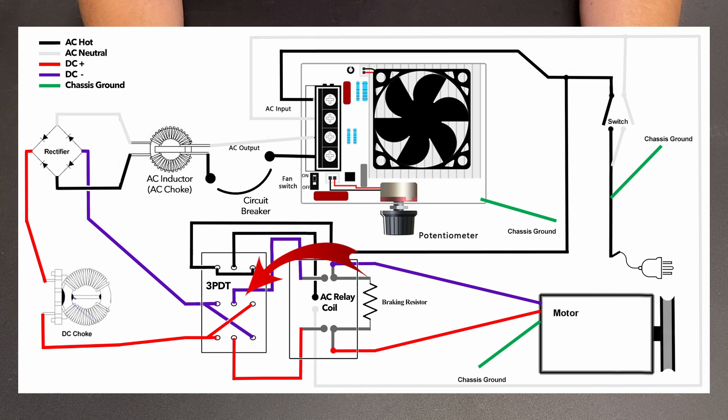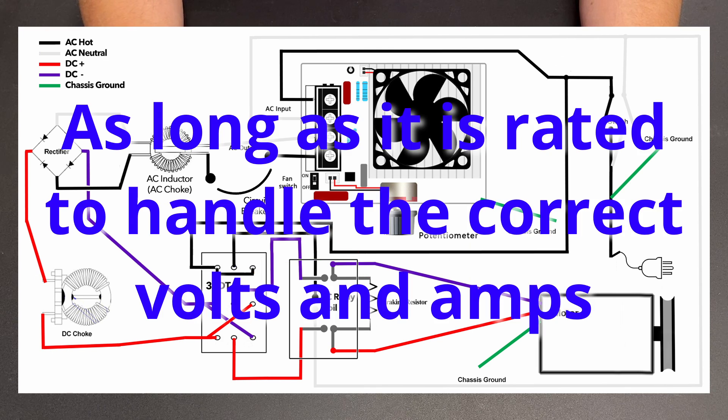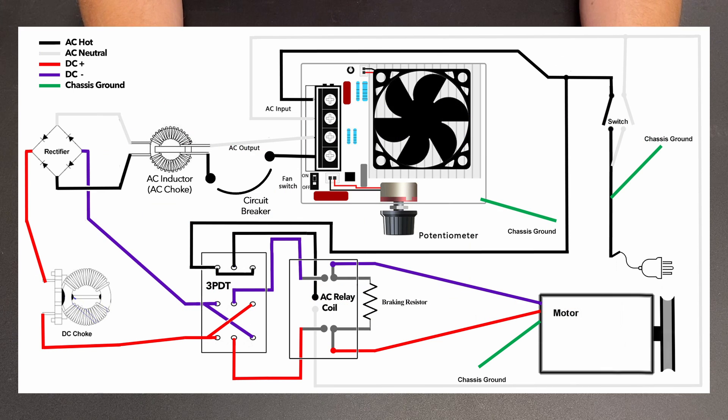Now I want to point out that a triple pole double throw switch is a triple pole double throw switch. It doesn't matter what flavor it is. It doesn't matter if it's a rotary switch, if it's a toggle switch, if it's a push button switch. As long as it's a triple pole double throw switch, you can use two of the poles as a direction switch, and you can use a third pole as a way to cut the power going to the relay.